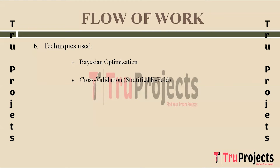The next technique is Stratified K-Fold Cross Validation, used to assess a model's performance and generalization ability. It ensures that each fold maintains the same distribution of target classes as the original dataset, which is crucial in fraud detection to evaluate model robustness and reduce the risk of overfitting. LGBM, XGBoost, and CatBoost were all trained using this technique.